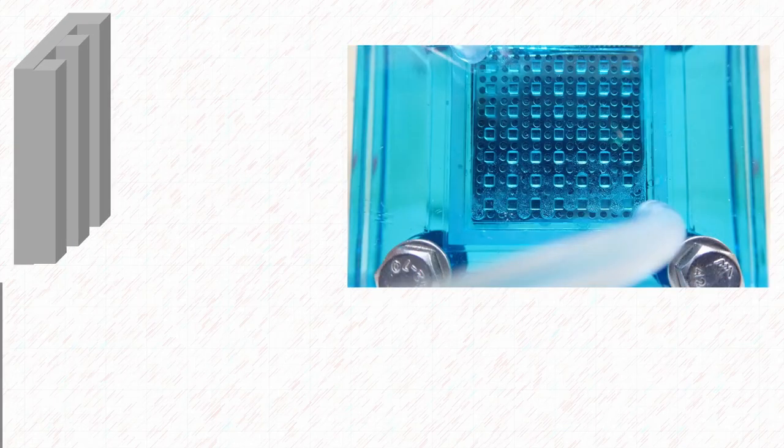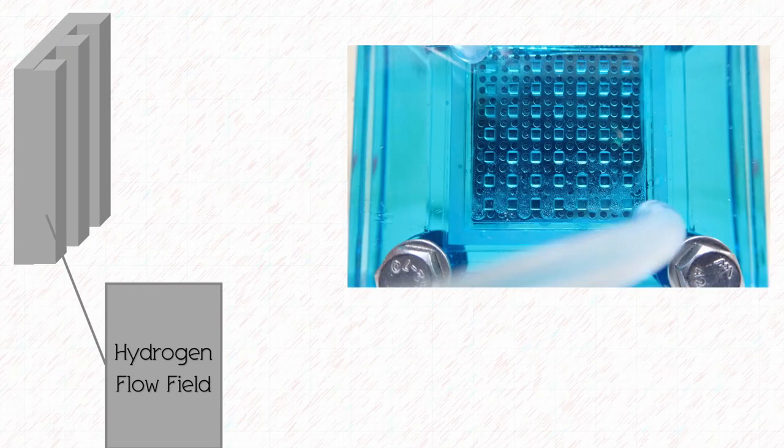Let's take a look inside the fuel cell. Looking at the outside there appears to be a perforated metal sheet. This is in fact something called the hydrogen flow field and it allows the hydrogen gas to escape from the fuel cell.